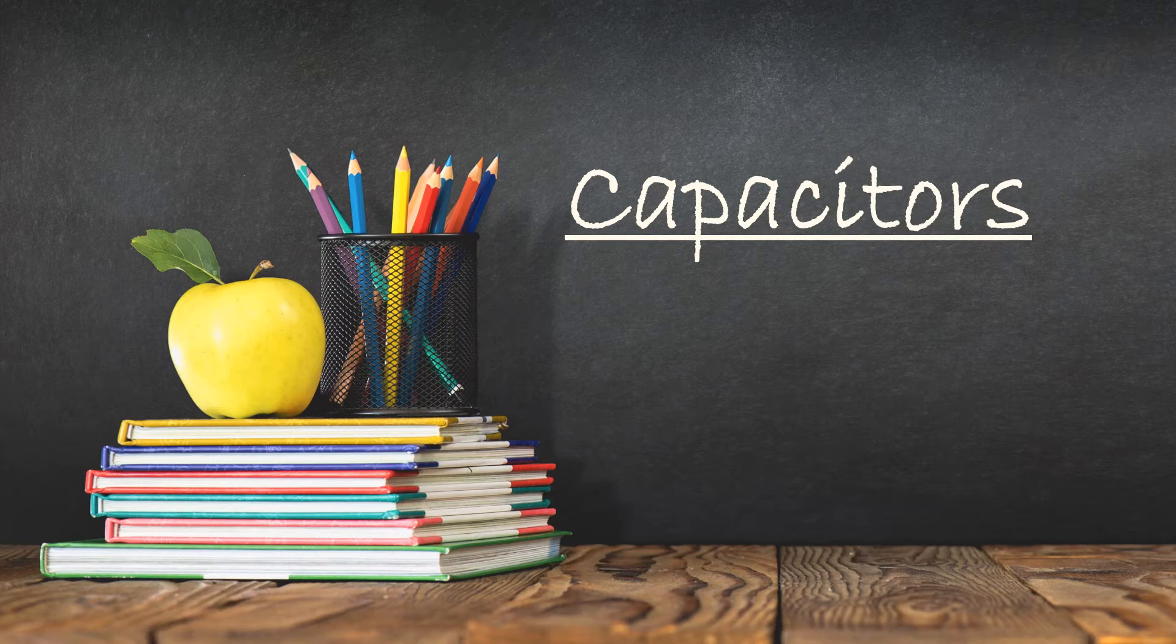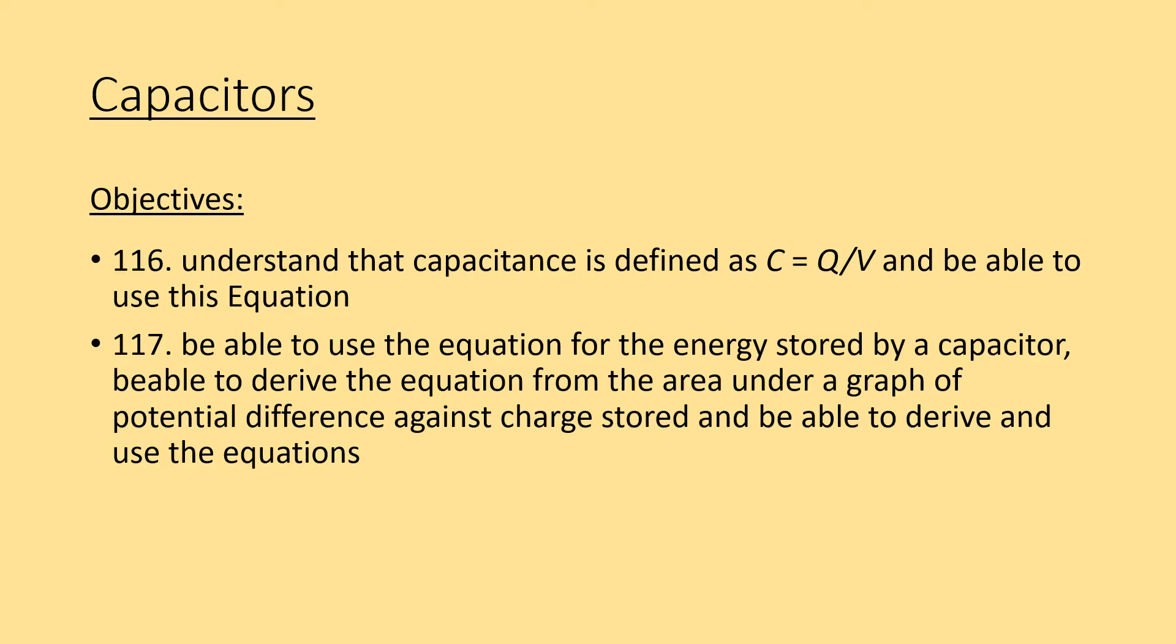Let's crack on with some actual capacitance. I'm just going to read the objectives to you. Objective 116 is understand that capacitance is defined as C equals Q over V, where C is capacitance, Q is charge, and V is voltage or potential difference, and be able to use this equation. Objective 117, be able to use the equation for the energy stored by a capacitor, be able to derive the equation from the area under a graph of potential difference against the charge stored, and be able to derive and use the equations. Hopefully, at the end of this video, you should be able to do that, or at least have the tools to begin thinking about that, which is what A-level physics is all about.